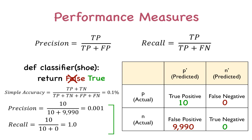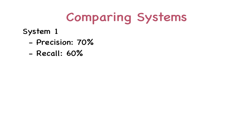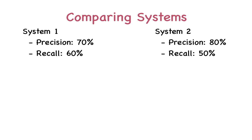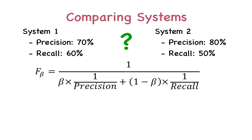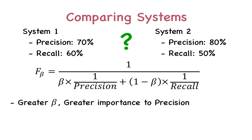But when we want to compare different systems, comparing both precision and recall — two values — can get pretty annoying. For example, system 1 has 70% precision and 60% recall, and system 2 has 80% precision and 50% recall. Which is performing better? We can get the answer by computing a single measure from precision and recall called the F-beta measure. It is the weighted harmonic mean of precision and recall. Beta is a factor that determines the importance of precision over recall — the greater the beta value, the greater the importance given to precision.